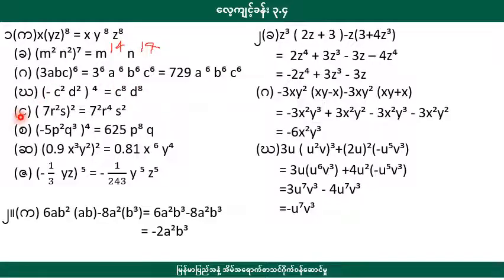Then 7r squared x5. Now take square — the power x squared will be over here, and 7 squared r to the power 4, x squared will be over here. Minus 5b squared to the power 4.